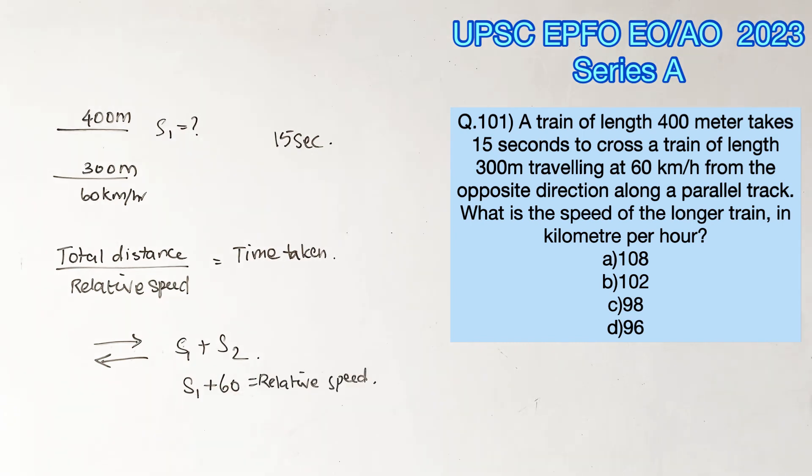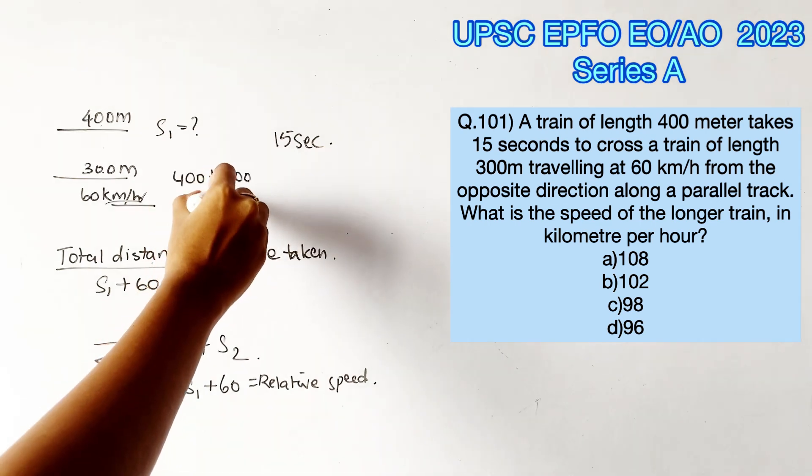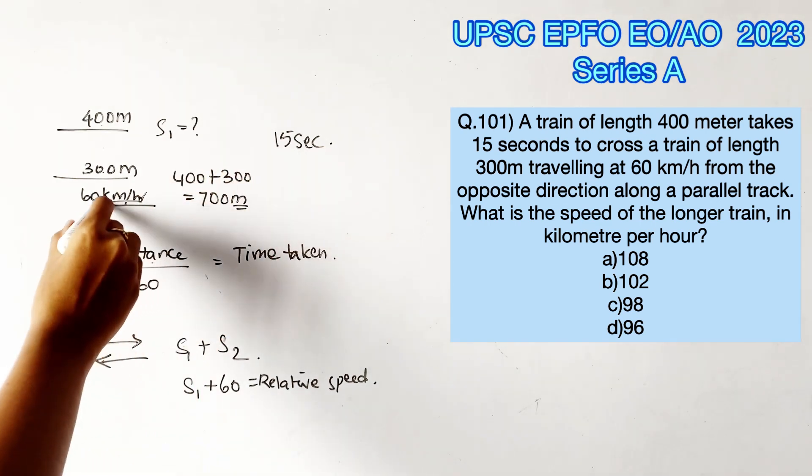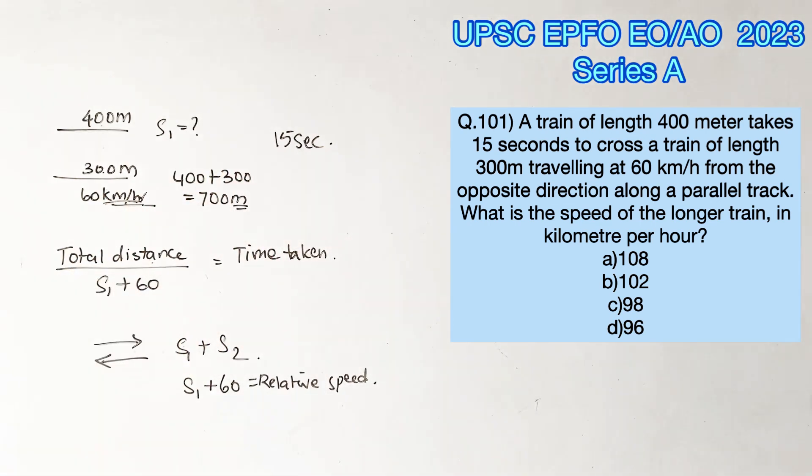The total distance is 400 plus 300 meters. Since we're dealing with kilometers per hour, we convert 700 meters to 0.7 kilometers. Substituting, we get 0.7 divided by S1 plus 60 equals the total time taken.